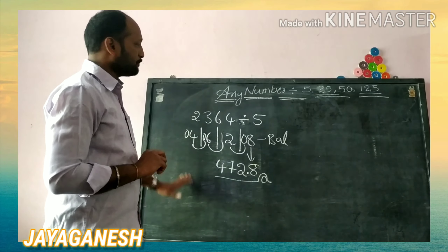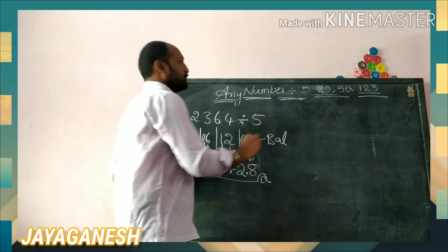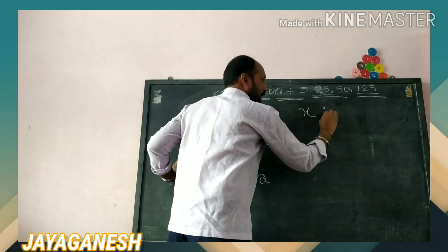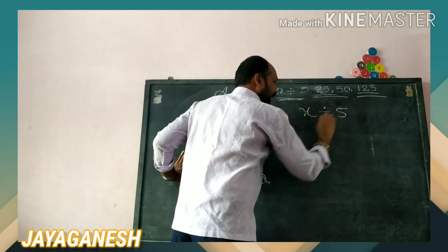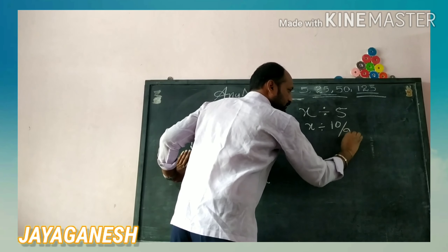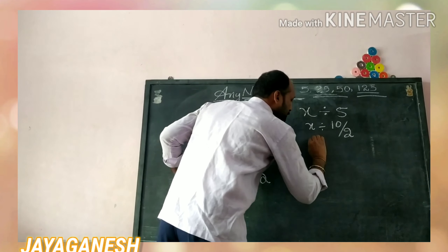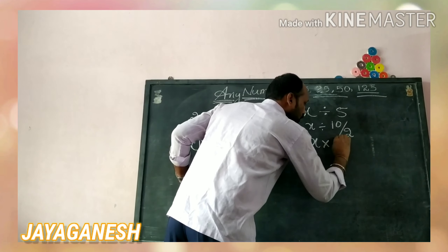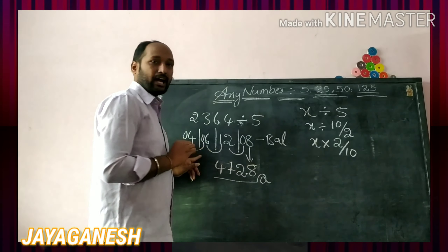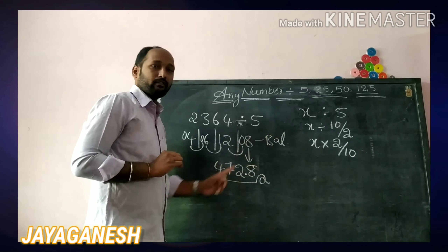Now, why are we making it double? It is very simple. Any number x divided by five can be written as x divided by ten-over-two, which equals x multiplied by two over ten. That is why I said make it double, and after one digit keep a dot. That is the method we are using.